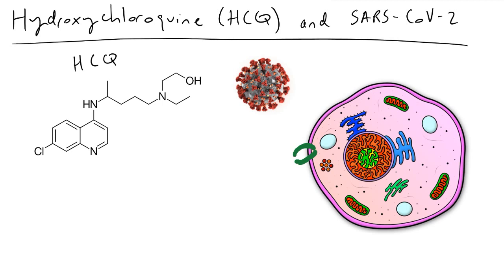Your cells, which I have here to the right, have this plasma membrane. This plasma membrane will let HCQ move right through it. Once it's inside of your cells, HCQ will become protonated, and when it becomes protonated, it is going to make things inside of your cells less acidic — turning them more basic.